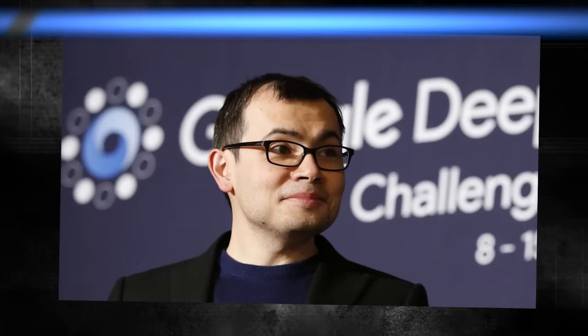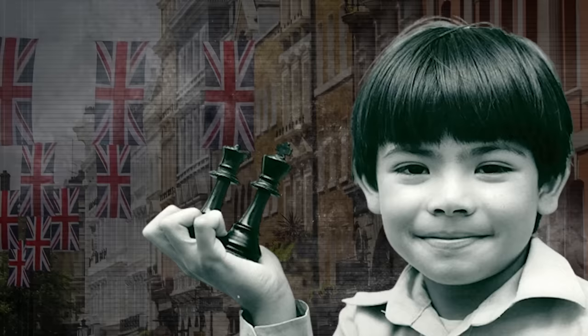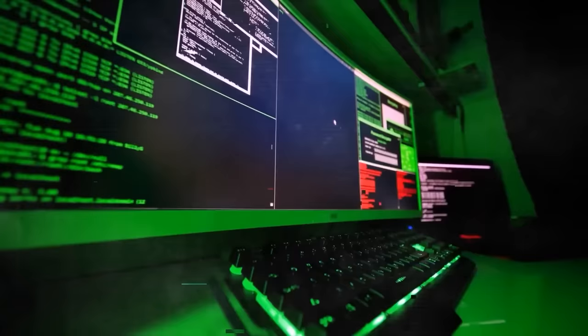Well, Demis Hassabis is a British artificial intelligence researcher and entrepreneur who was born in 1976 to a Greek Cypriot father and a Chinese Singaporean mother. He grew up in North London and was a child prodigy in chess from the age of four. He reached master level at the age of 13 and captained many of the England junior chess teams. He also taught himself how to program from books and bought his first computer with his chess winnings.